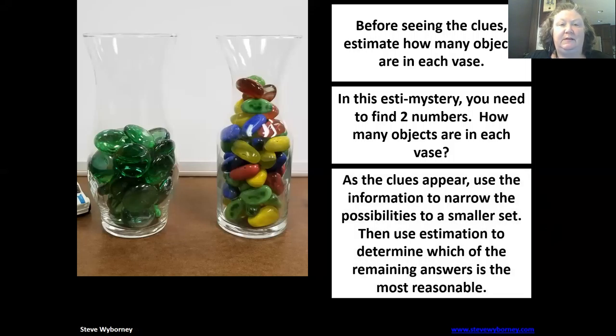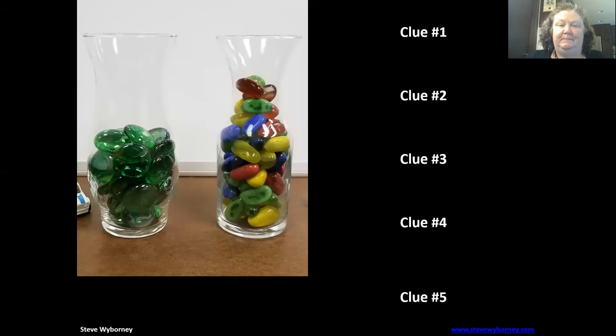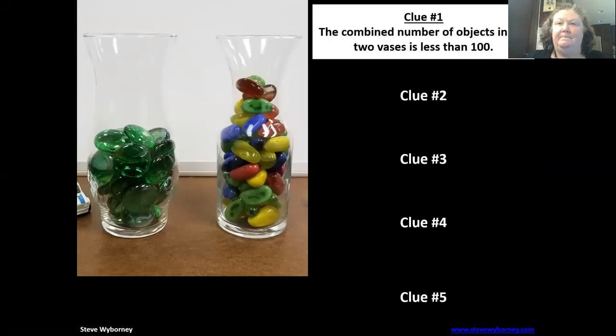Clue one: the combined number of objects in the two vases is less than 100. So when I take what I think is in the green vase and I add it to the multicolored vase, both numbers together are less than 100. Clue two: one of the vases is holding exactly twice as many objects as the other vase.